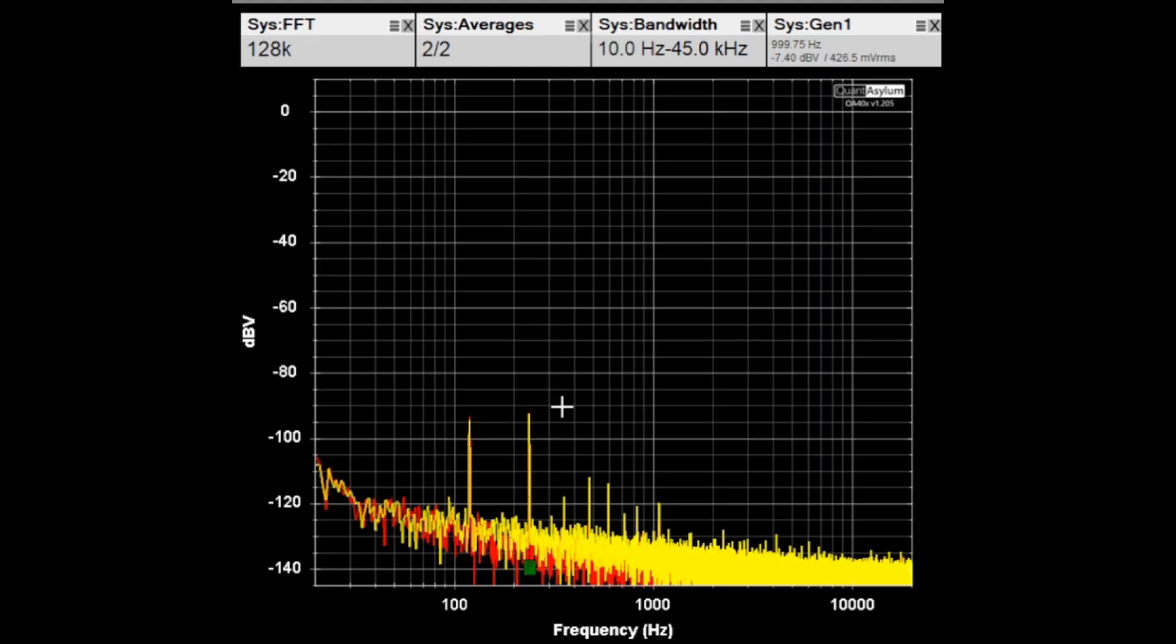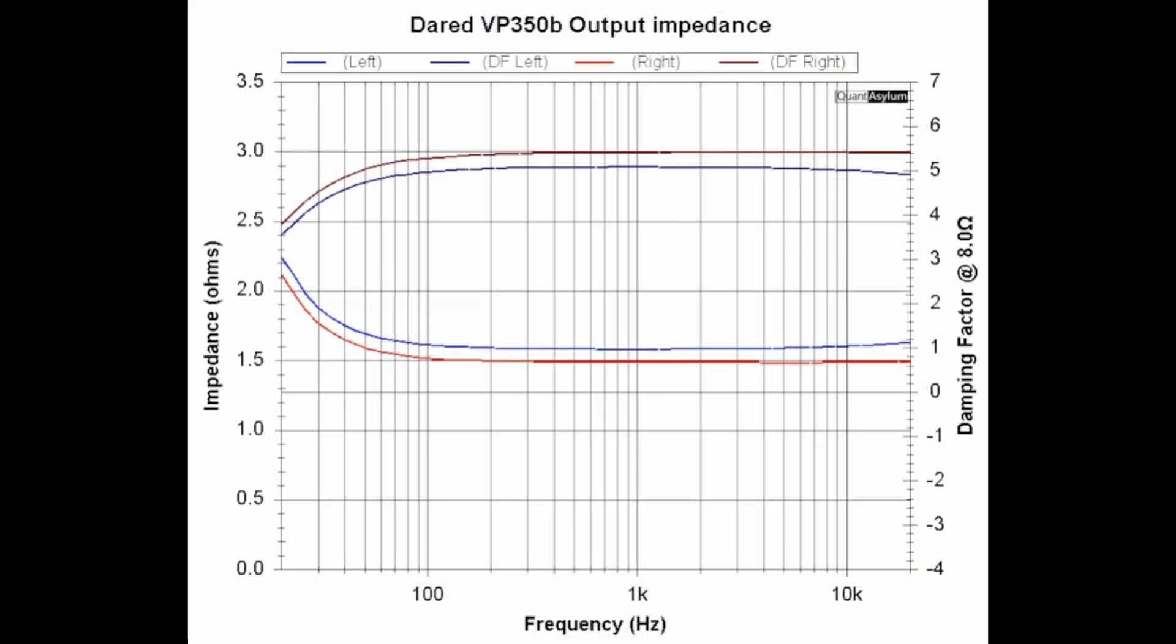In case you were wondering about the Derrod VP 350B's output impedance or damping factor, I have them plotted both on the same graph for you. Our damping factor is up here and it's just around five, maybe five and a half. And the output impedance are these plots here for each of the channels, and it's down around what, 1.5, 1.6 ohm. So it's really not very good as far as damping factors or low output impedances.